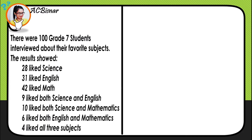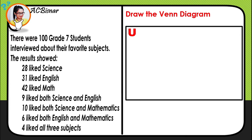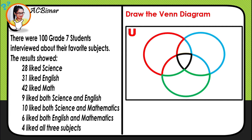We are going to represent this using a Venn diagram. First, we draw a rectangle to represent the universal set, then we use three circles to represent the three subjects: English, Science, and Math.